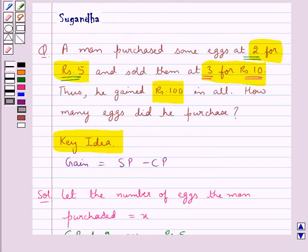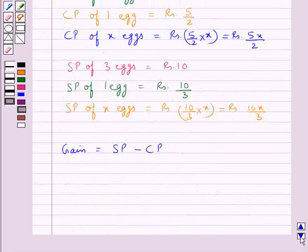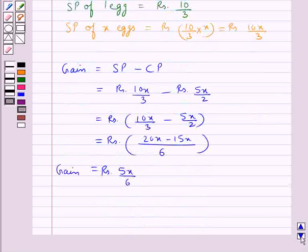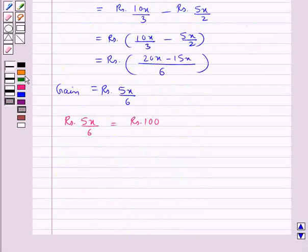Now in the question we have that he gained Rs. 100 in all. That means this gain, Rs. 5x upon 6 is equal to Rs. 100. So from here we can easily find out the value for X, which is equal to Rs. 100 into 6 upon 5.